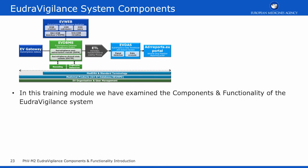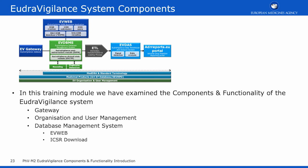To recap, in this training module we have examined the components and functionality of the EudraVigilance system, which has included the EudraVigilance Gateway, the Organisation and User Management System, the Database Management System components, EVWeb and the ICSR download function, the Data Analysis System, and the ADR Reports Portal. We hope you have found this training course useful, and the feedback form is available from the EMA corporate website.